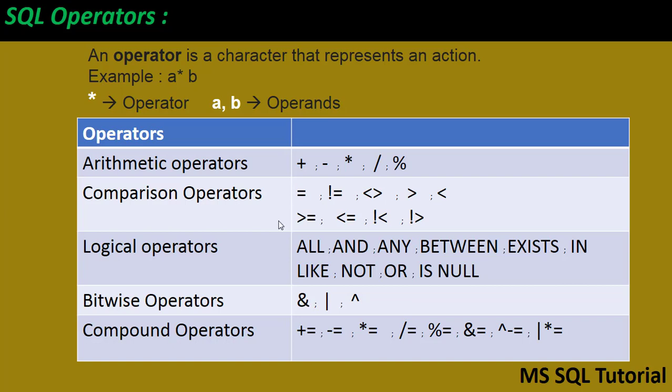If you see an example on my screen, A multiplied by B — that star represents an arithmetic operator for multiplication. A and B are the operands which hold the values. For example, 2 star 10: in that case 2 and 10 are the values of the operands, and the star represents the operator performing the multiplication.